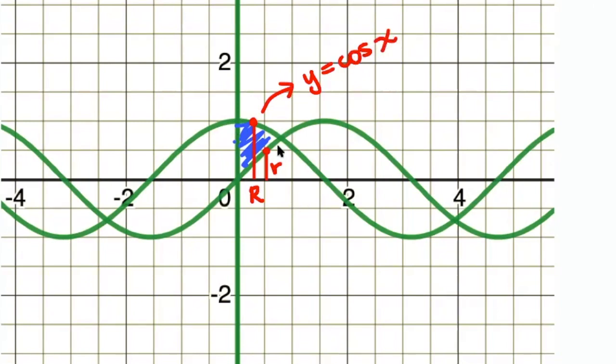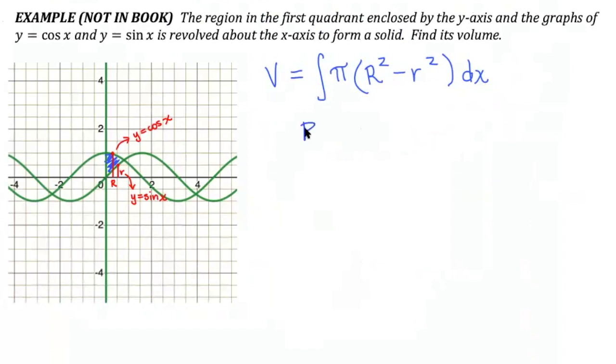My little r is located on the curve that's starting at 0, 0 and going up. So my little r is being controlled by the function y equals sine of x. So I'm going to let capital R equal cosine of x. I substitute those into my integral.